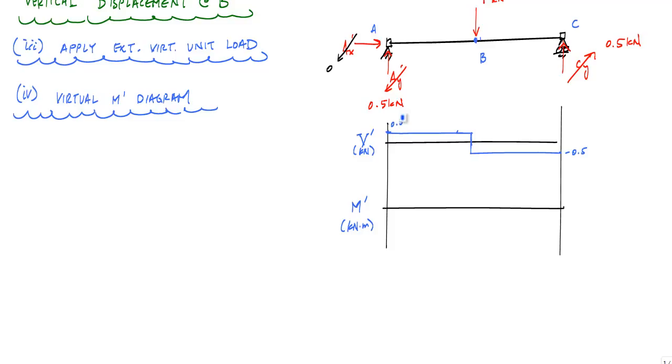and then straight across. My moment diagram, because my shears are constant, my moment diagram is linear, and so I will have a positive linear moment diagram increasing at a rate of 0.5 kilonewtons meter per meter,